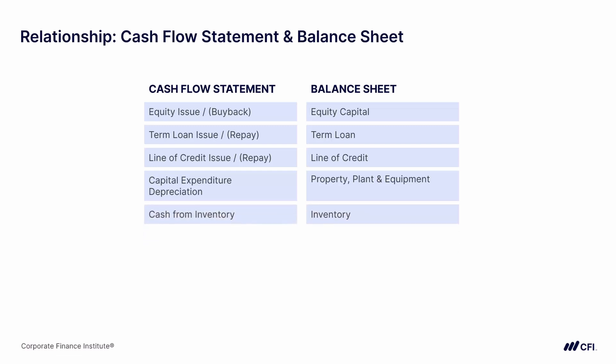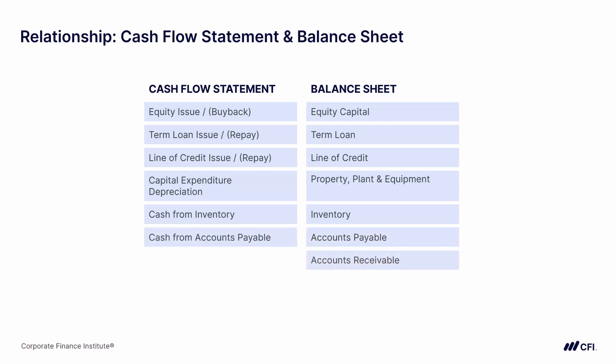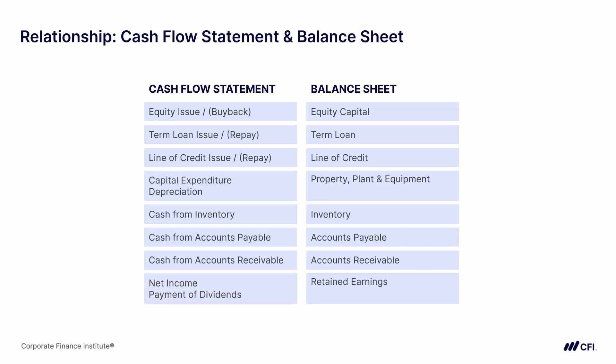You may see inventory listed as an asset on the balance sheet, while on the cash flow statement there may be a corresponding line for cash changes due to inventory. Similarly, the balance sheet may have accounts payable and accounts receivable, each with corresponding cash flow statement lines. Retained earnings on the balance sheet matches with net income and payment of dividends on the cash flow statement — net income increases retained earnings and payment of dividends detracts from it. Deferred tax on the balance sheet represents an accumulation over time, while the cash flow statement shows the deferred tax amount for that specific period.